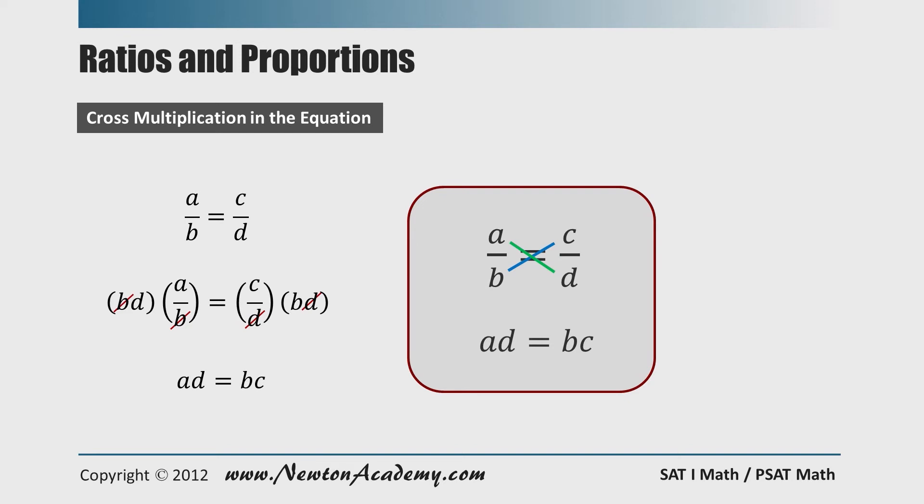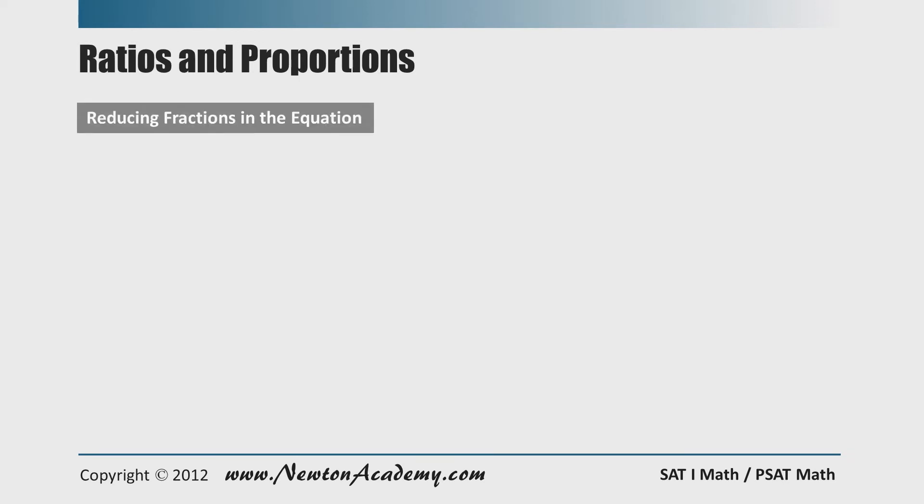With this simple technique in mind, let's see how we can reduce fractions even before cross multiplication, which will simplify the computation a lot. Let's say we have A over B equals C over D. We all know that A and B can be reduced, and C and D can be reduced, but not many students, especially in the United States, are taught that A and C can be reduced, and B and D can also be reduced.